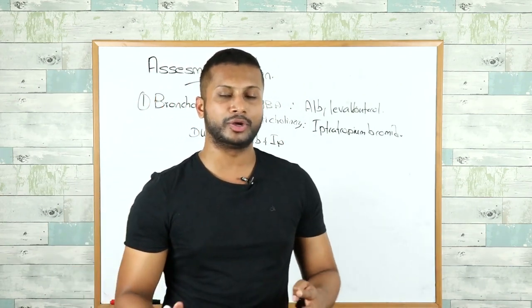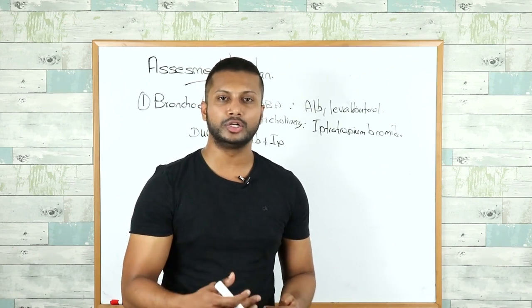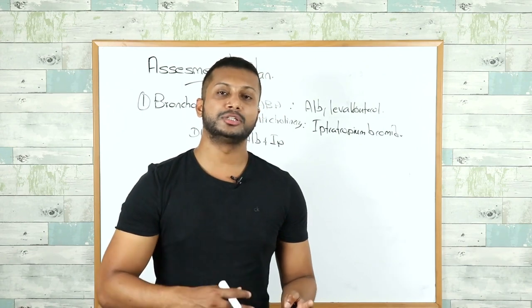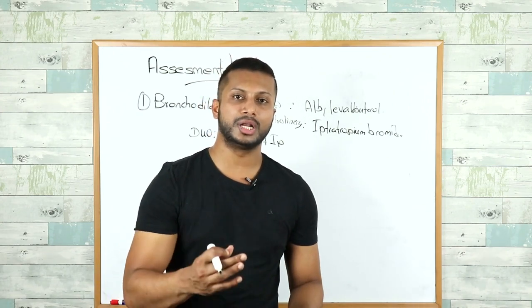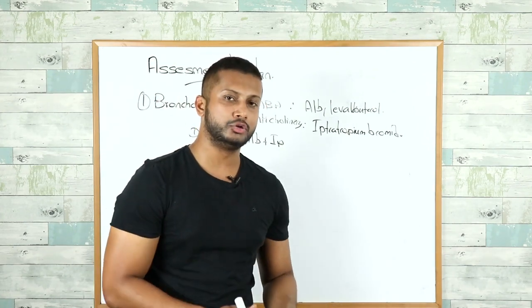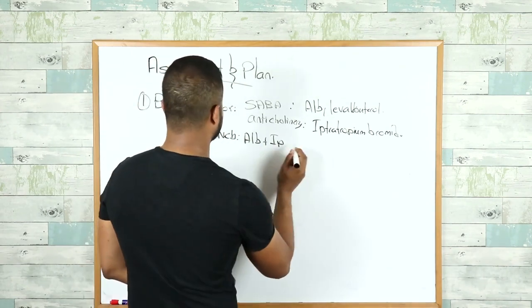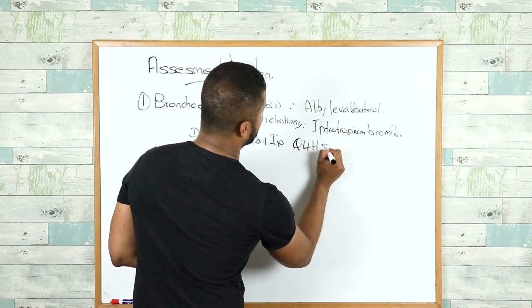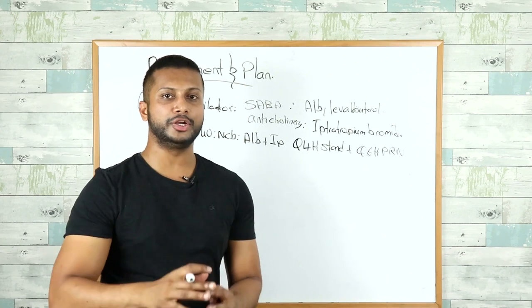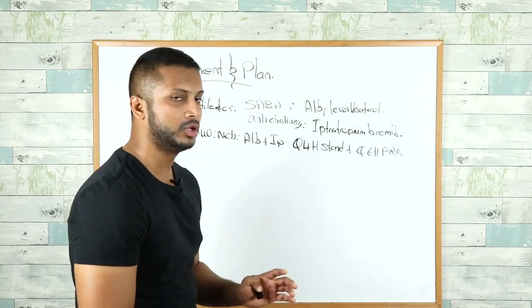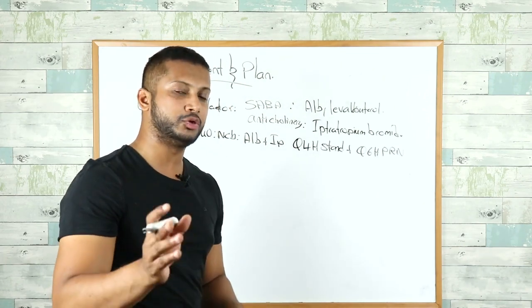According to the guidelines, albuterol nebulization can be used every 1 to 4 hours, or every 15 minutes if a patient is much more severe. Ipratropium bromide can be used every Q4 to Q6 hourly. For all practical purposes, you can order Duonebs as Q4 hourly standing dose plus Q6 hourly PRN. This works perfectly fine — feel free to adjust it, but this is a rule of thumb for how you'll use them.